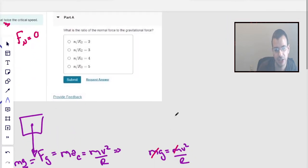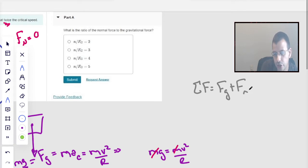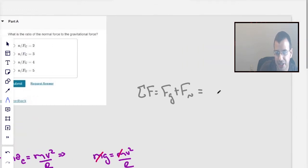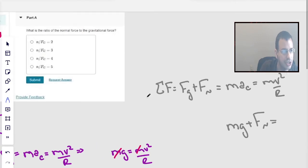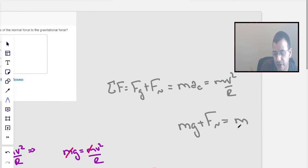Since the forces are going to act in the same direction, the sum of all forces is going to be force-gravity plus force-normal, which is going to be mass-times-acceleration, which we know is going to be mv-squared-over-r. We want to find the ratio of normal force-to-gravitational force.